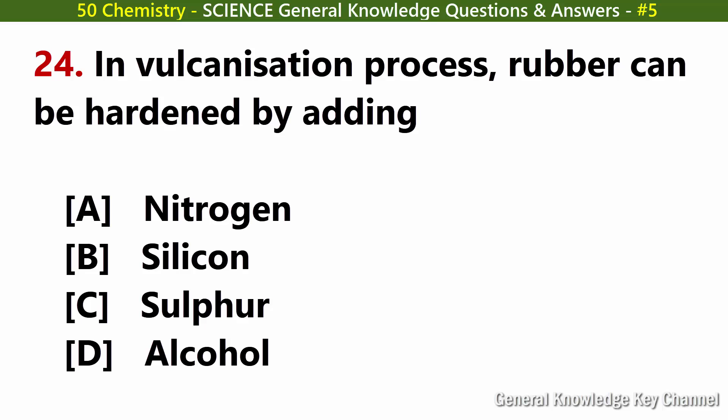In the vulcanization process, rubber can be hardened by adding. Answer C: Sulphur.